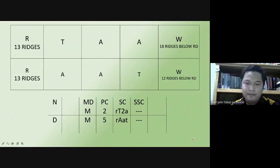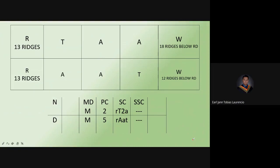Let's apply this. First, let's get the primary classification. The primary is 2 over 5. This is 0, 0, this is 0, 0, this is 1 — 1 plus 1 is 2. Then 0, 0, this is 4, this is 0, 0 — 4 plus 1 is 5. So the primary classification is correct.